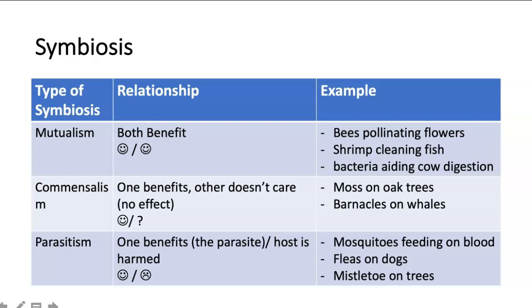An example of mutualism is bees pollinating flowers. The bee is getting pollen and help for its hive, while the flowers are also being pollinated, which is difficult for them to do without the help of bees.